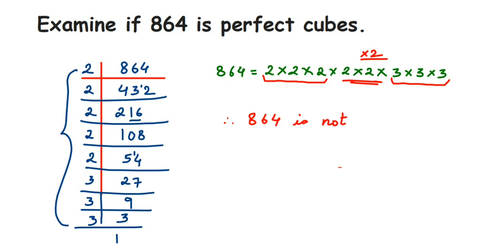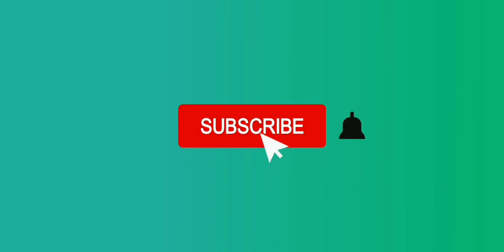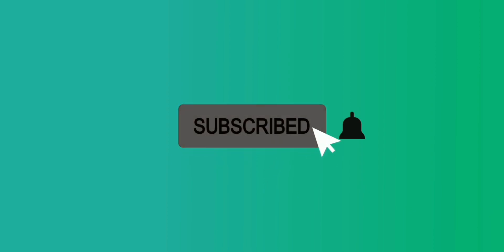So this number is not a perfect cube. If the number is a perfect cube, all the factors will form sets of 3 — in each set, the same factor must appear three times. Therefore 864 is not a perfect cube. I hope this question is clear. In case you have a further question or doubt, you can drop a comment. Thank you so much for watching.